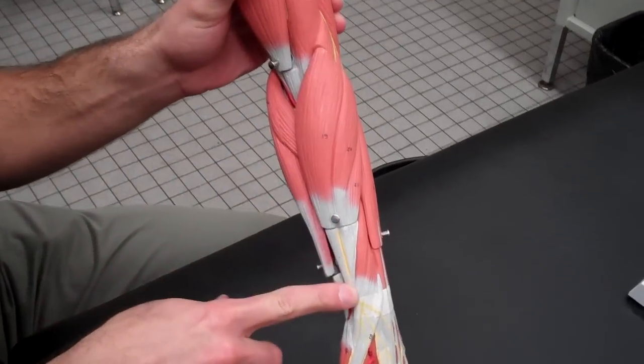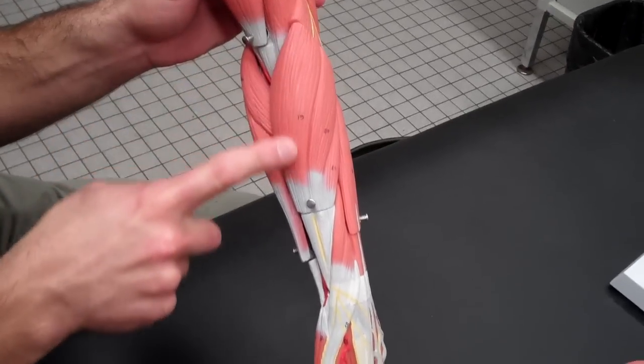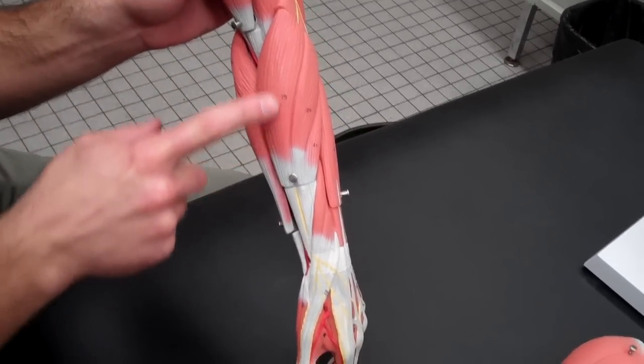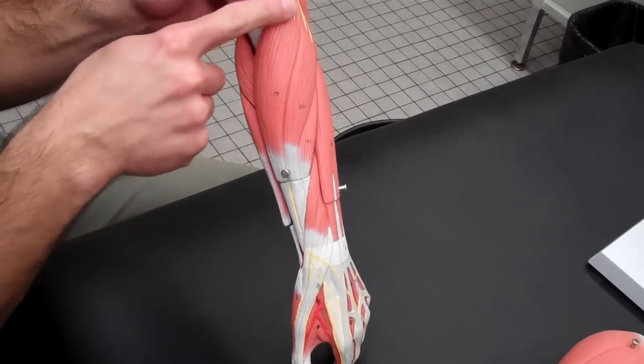This bigger muscle right here that you're looking at, running this whole length here, is your brachioradialis.